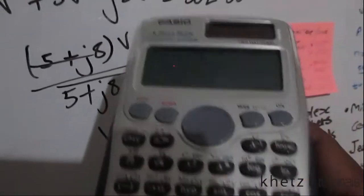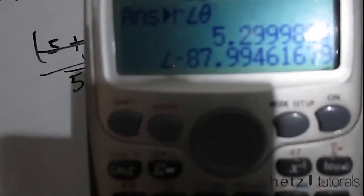Now what you're basically going to do is transform this into polar form so it can then transform it into its equivalent sinusoid. So now in polar form the answer to that is 5.3 with an angle of negative 88.